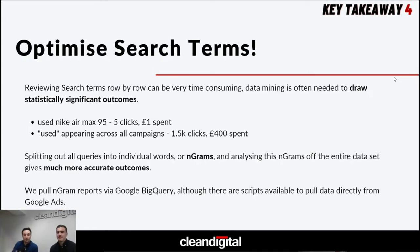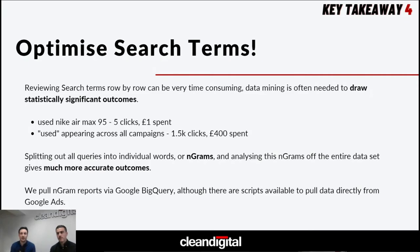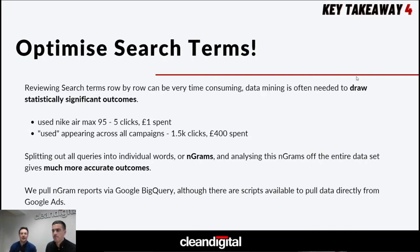You may see a term like 'used Nike Air Max 95' with 5 clicks and £1 spend — not the end of the world. But 'in doubt, zoom out' is a good expression for PPC campaigns. When looking across the whole account at that specific term, we see it's had 1,500 clicks and £400 spent — depending on the advertiser, that's a lot of wasted money. What we're advocating is looking at all queries, splitting them into individual words — commonly referred to as N-grams within the industry — and understanding performance over a large data set. We use N-gram reports via Google BigQuery, although there are scripts available that do the same.